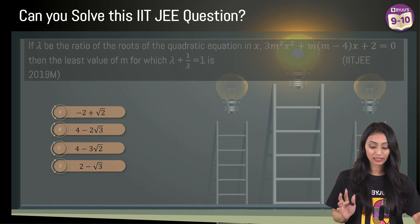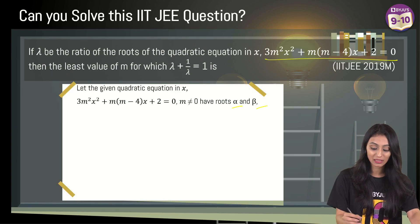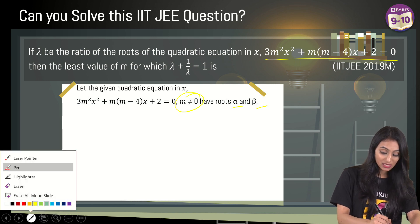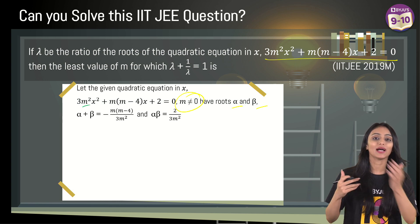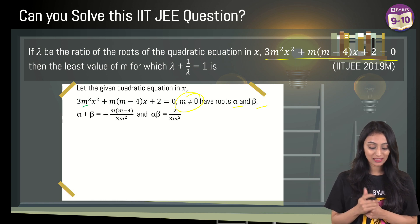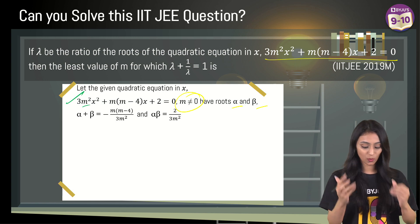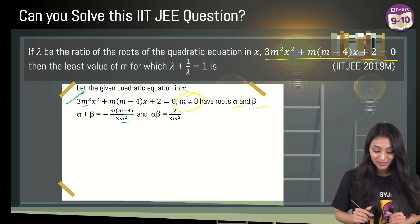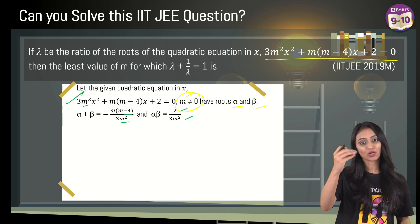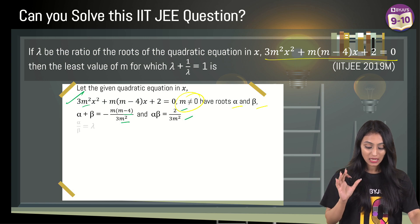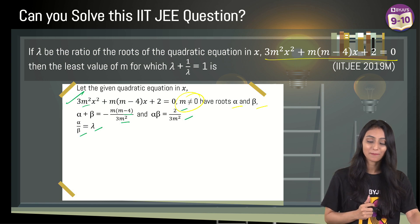Using this condition, note that m cannot be 0 because if m = 0 the equation is no longer quadratic. By comparing with the general quadratic equation, the sum of zeros = −b/a = −m(m − 4) / 3m², and the product of zeros = c/a = 2 / 3m². Lambda is defined as alpha/beta, the ratio of the roots.